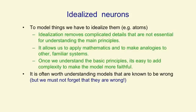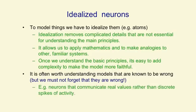Of course, we have to be careful when we idealize something, not to remove the thing that's giving it its main properties. It's often worth understanding models that are known to be wrong, as long as we don't forget they're wrong. For example, a lot of work on neural networks uses neurons that communicate real values rather than discrete spikes of activity. And we know cortical neurons don't behave like that, but it's still worth understanding systems like that. And in practice, they can be very useful for machine learning.